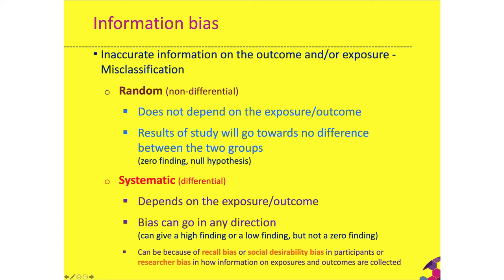Three core types of systematic bias: first, recall bias — people not remembering what they ate, did, or experienced. Second, social desirability bias — people want to impress the researcher or are embarrassed, so they underreport things like sexual partners, drug use, or smoking, or conversely overreport their health status because they enjoy the researcher's attention and don't want to make a fuss about pain. Third, researcher bias — where researchers purposely or unintentionally make errors in collecting exposure and outcome data.